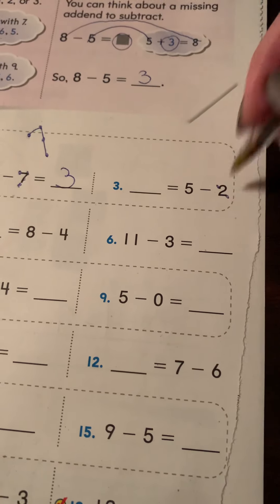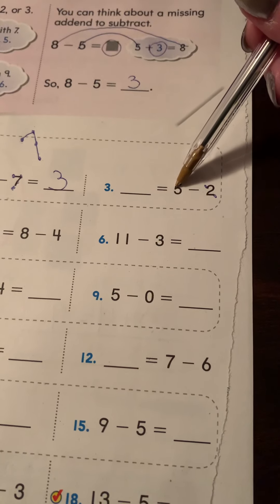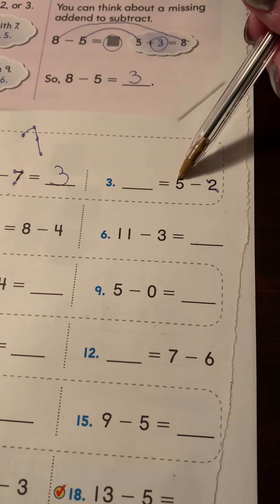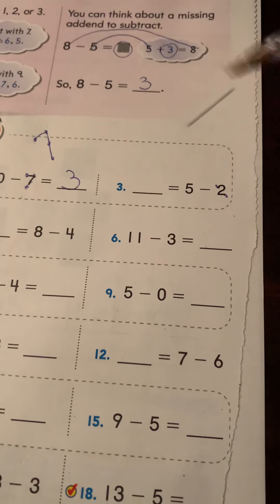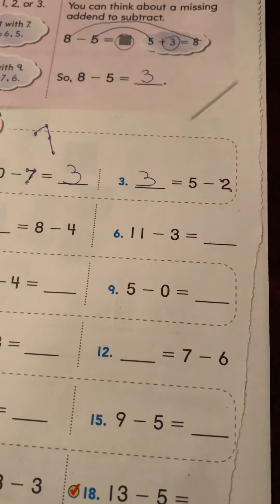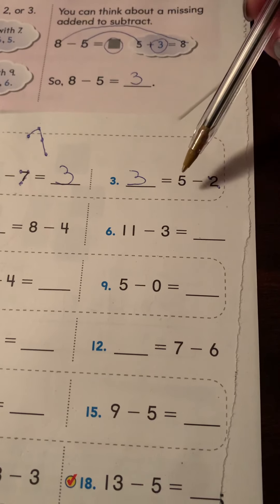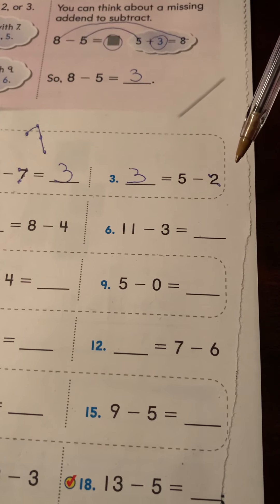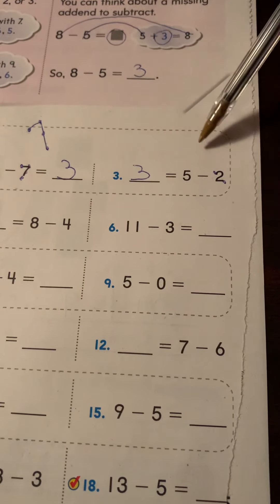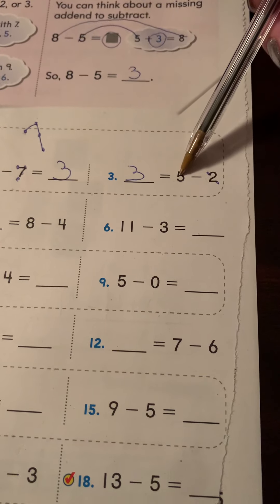Put five in your head, five, count backwards, four, three. Five minus two is three. Remember that was related to adding. So if you know five minus two is three, you probably also know that three plus two is five.